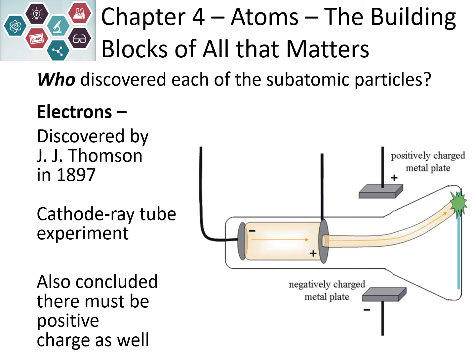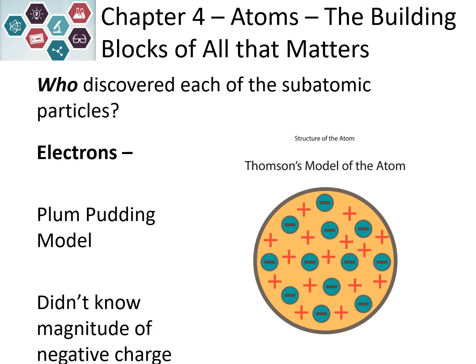Because matter is neutral, this meant there also had to be positive charge inside the atoms. So we had negatively charged electrons and some sort of positive charge. Thomson proposed the plum pudding model of the atom — he knew there were negative charges and there had to be an opposing positive charge, so he proposed they were just mingled together. You could think of it like a blueberry muffin model, where the electrons are the blueberries floating around in the rest of the muffin.